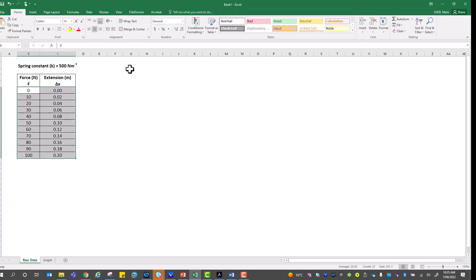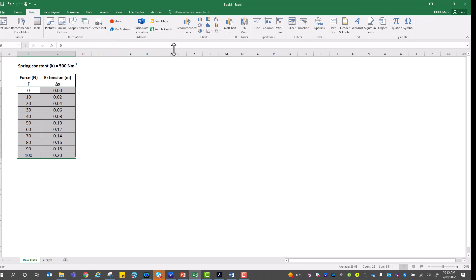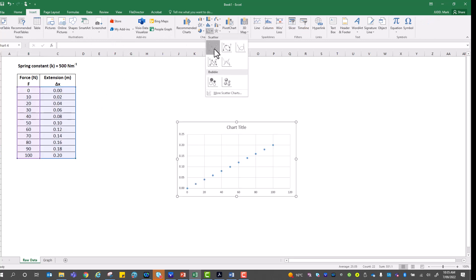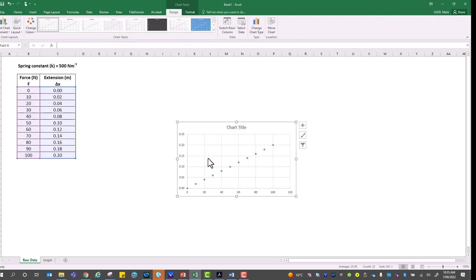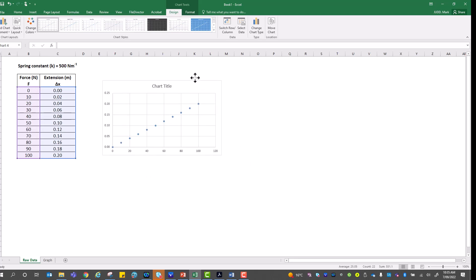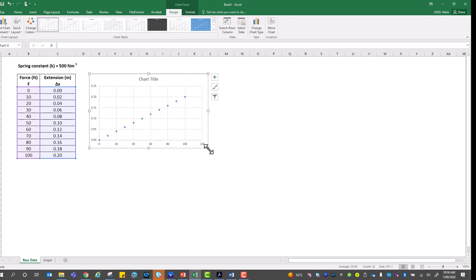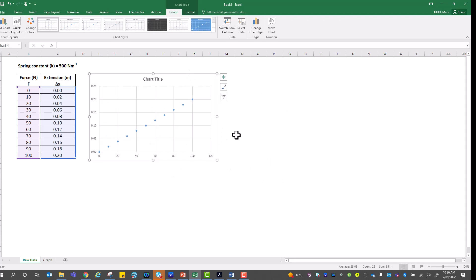Step number four, we now want to present this force extension data on an XY scatter plot using Excel. First of all I'm going to select the numbers, go to insert and scatter plot as my choice, just the dots. Now when we do this it takes the second column and puts it in the Y variable and the first column in the X variable. But that's not actually what we're trying to do. We want force on the vertical.